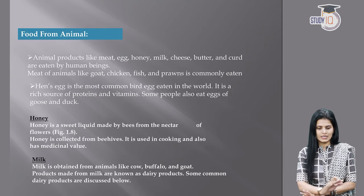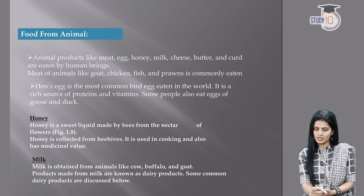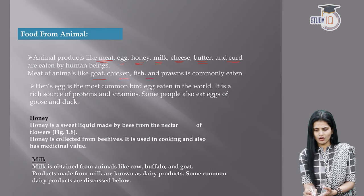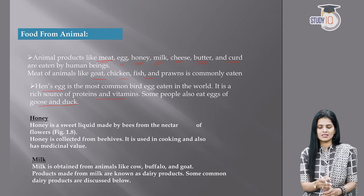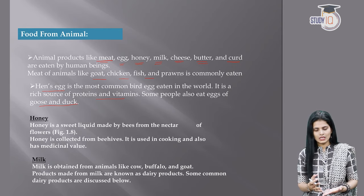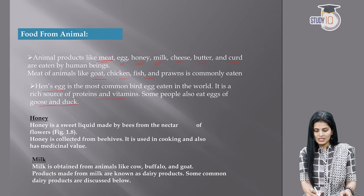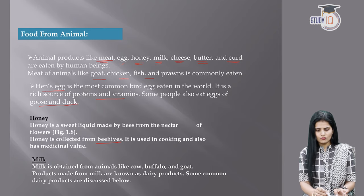Now food from animals. Animals provide us food in these forms: meat, egg, honey, milk, cheese, butter, and curd. Meat comes from goat, chicken, fish, and prawns. Hen's egg is the most common bird's egg eaten in the world — it is a rich source of protein and vitamins. Some people also eat eggs of goose and duck. Honey is a sweet liquid made by bees from the nectar of flowers and is collected from beehives. It is used for cooking and has medicinal value.